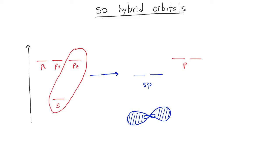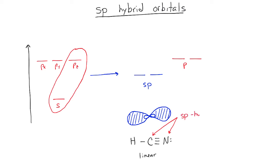This is the kind of bonding that you get when you have a carbon or a nitrogen that is triple bonded to another atom. The geometry that goes along with this is linear. So we would say that this carbon atom and this nitrogen atom are sp hybridized.